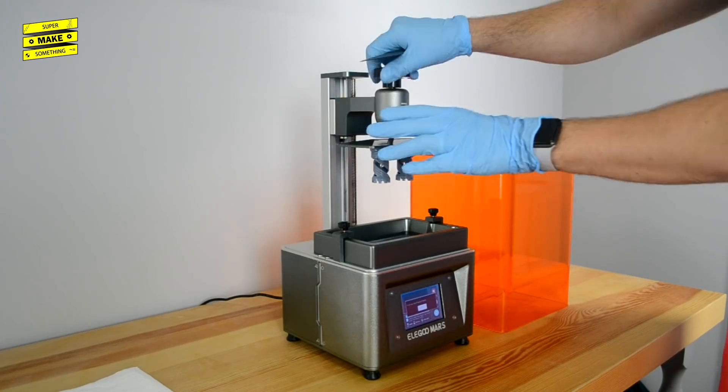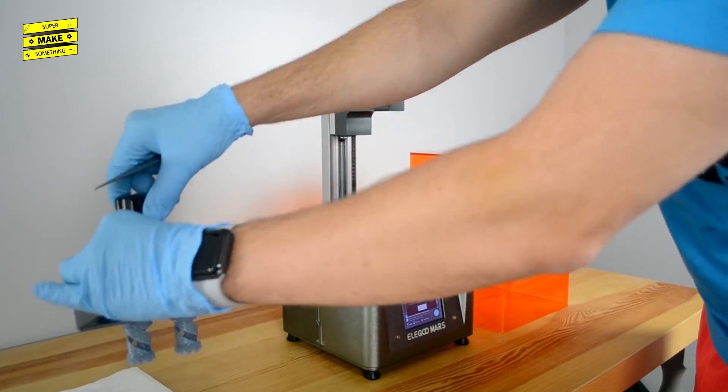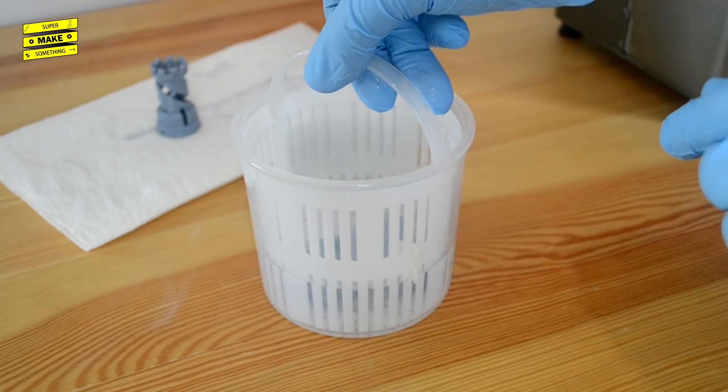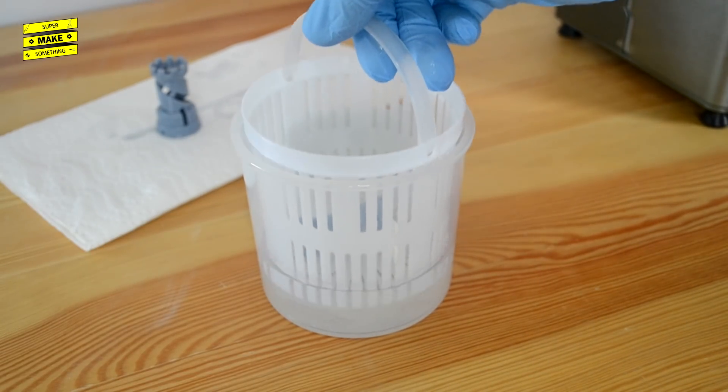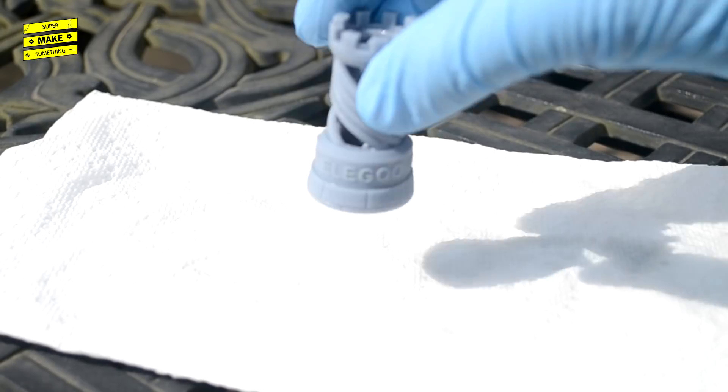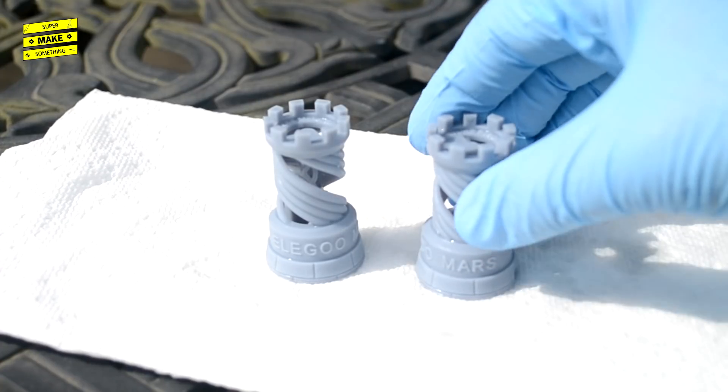After the print completed, I carefully removed the printing surface assembly from the printer, and then freed the test pieces. After this, I rinsed the pieces in 99% isopropyl alcohol to remove any excess resin, followed by a quick dip in some clean water, and placed them outside for about an hour to allow them to finish curing in the sun.